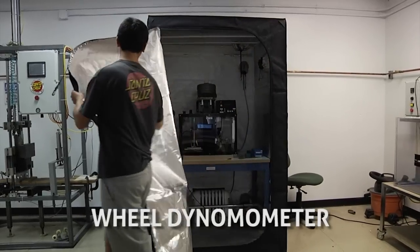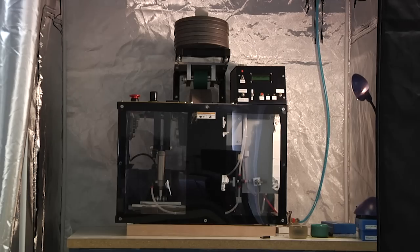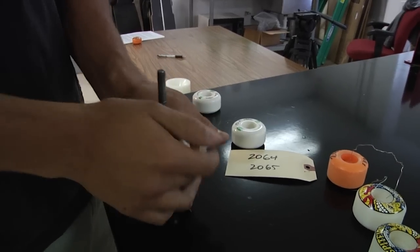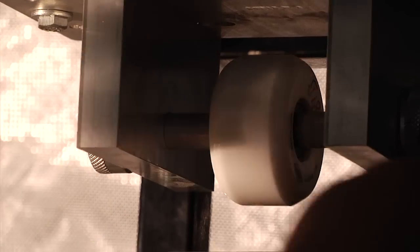This is the wheel dynamometer. The wheel dynamometer can test both the speed of the wheel and the speed of a set of test bearings. A test wheel is mounted with a standardized Indy 7 bearing set used for all urethane speed tests. The wheel is placed into the machine.